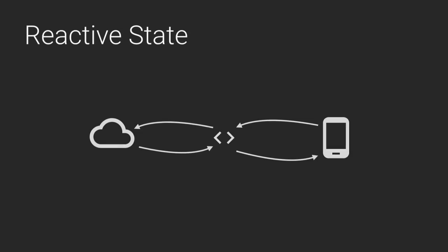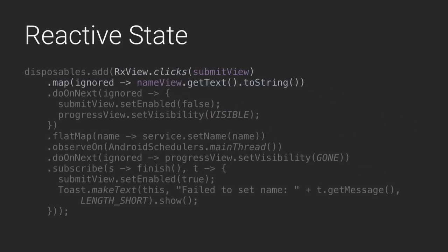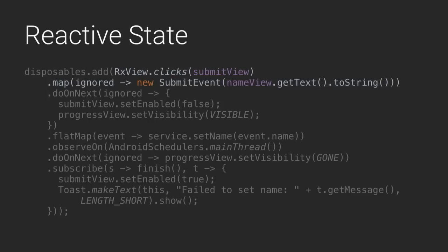So let's look at how we can actually achieve this in code. We have clicks as the originator of the event, and this impure getText function that's yanking data out. We need to consolidate those — if we slide that up, when the click happens we immediately grab all the data we need. We need some kind of event object that represents both the action and the data required to fulfill it. Then our flatMap is updated and is no longer doing things impurely — it's using the event that's in the stream to create the asynchronous action.